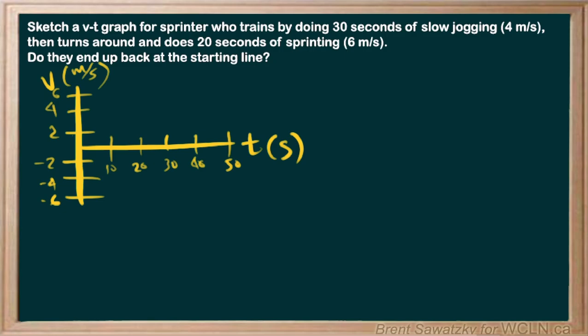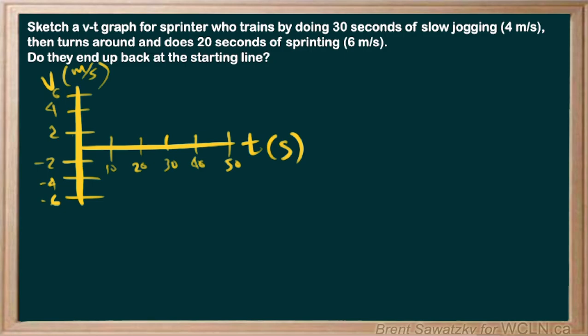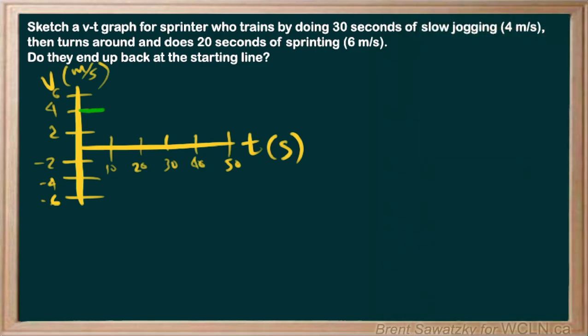Okay, and so we're going to consider, so we have to start off, he starts off at four meters per second and does that for 30 seconds. So we'll consider the original direction as positive, and so we'll just change color here. And so we'll consider it positive, and we go up like that for 30 seconds. And it's a constant velocity. It just says that he's 30 seconds of slow jogging, and we can cut it off there.